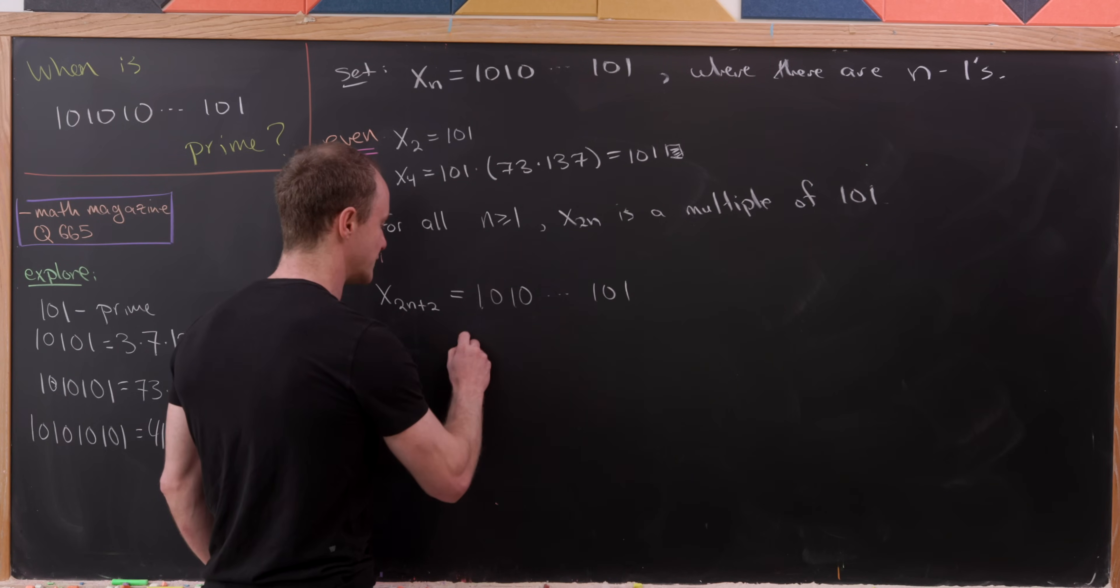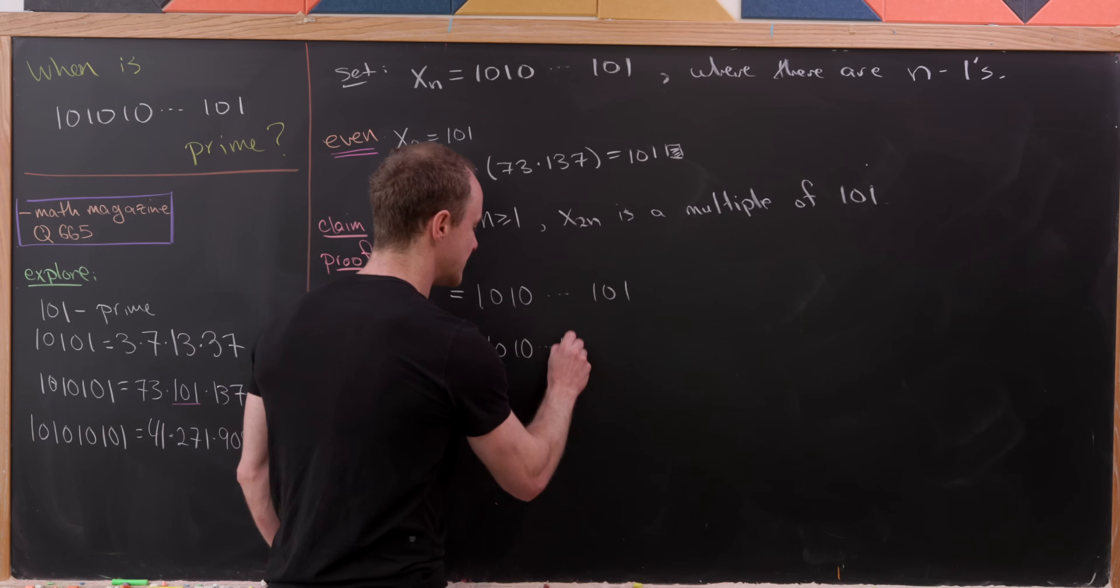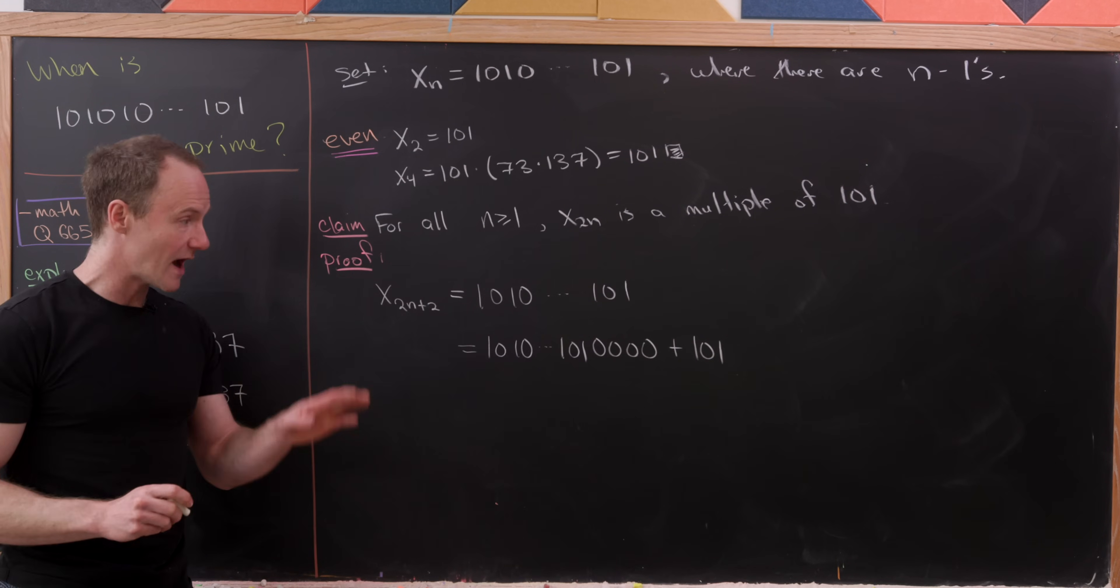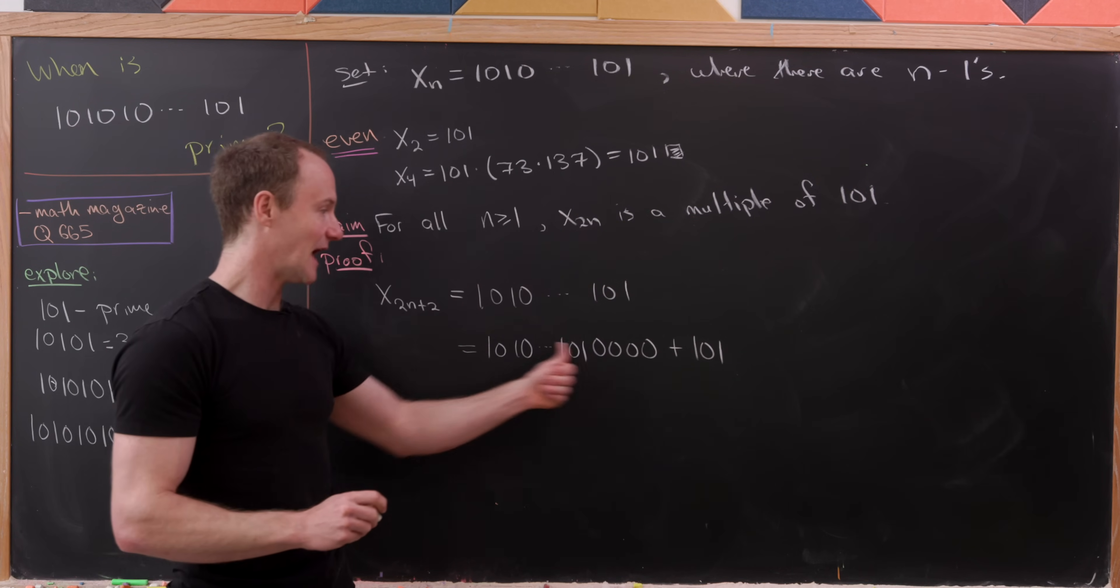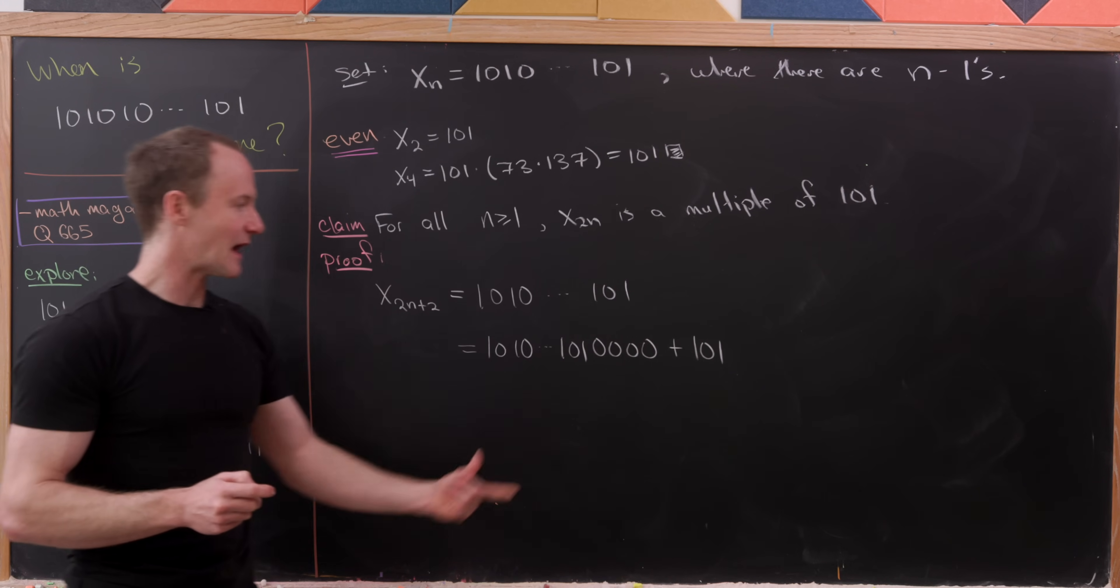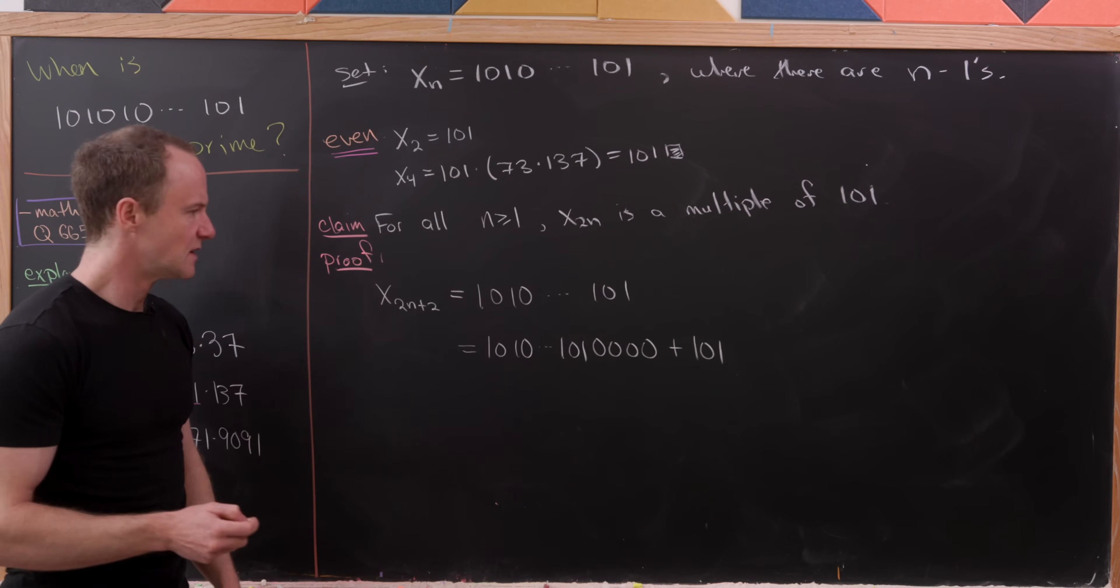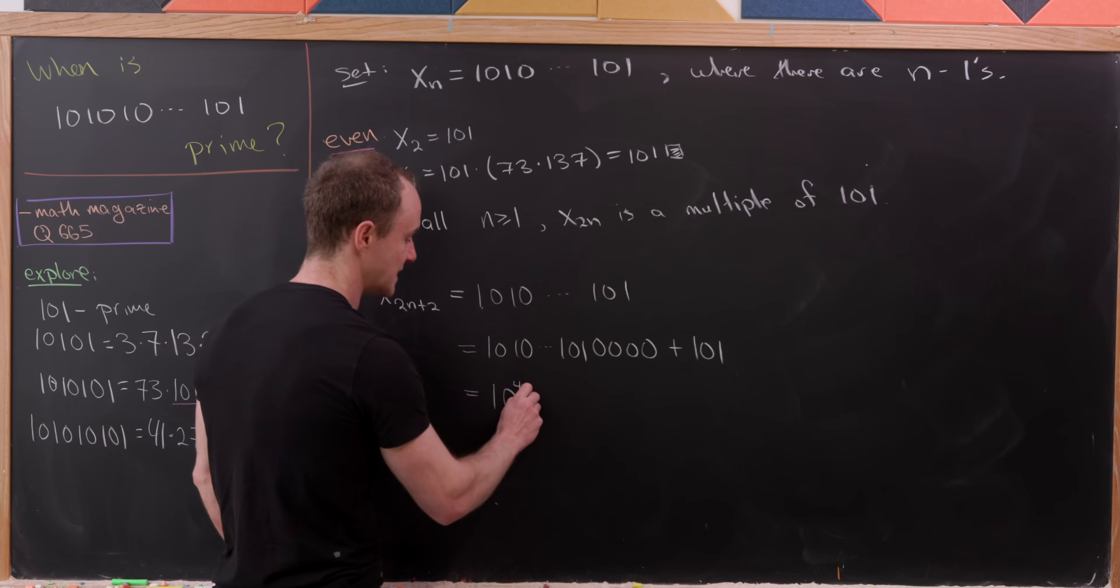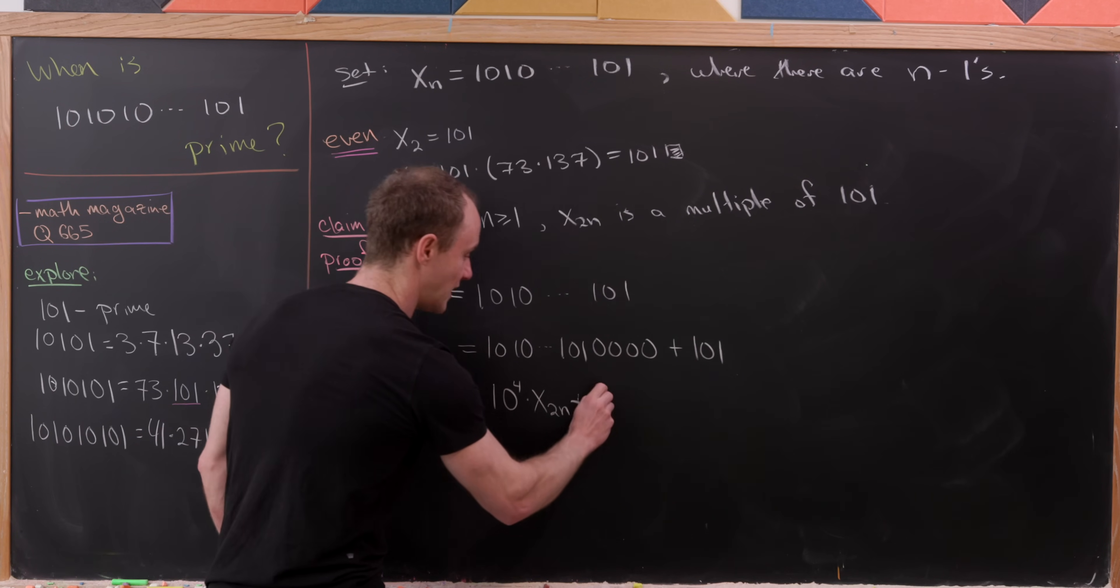Where there are 2n plus 2 total 1s. And the important thing here is we can rewrite this as 1010, and so forth, 1, 0, 1, 0, 0, 0, 0, 0, 0, plus 101. Let's observe that I just took this 101 that's at the end and moved it off of the entire term into its own term. And that would be these first three digits. Notice the digit just to the left of that is a 0. So everything here works. But now let's observe that this is simply equal to x to the fourth power times—notice that that is x sub 2n—and then we have plus 101.